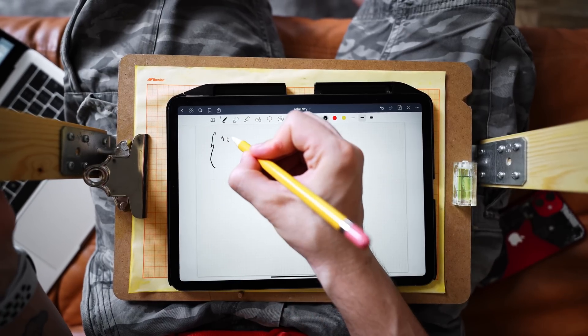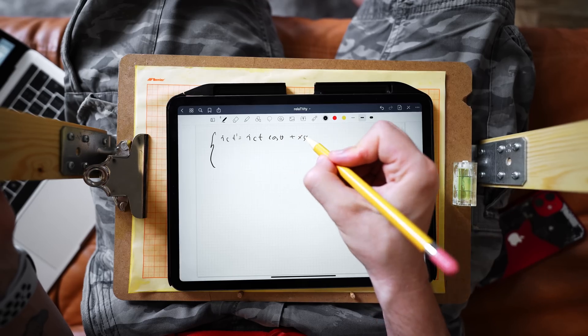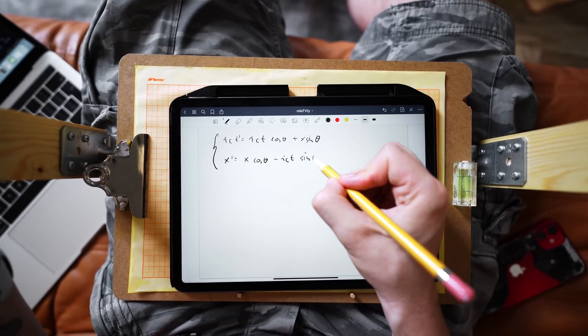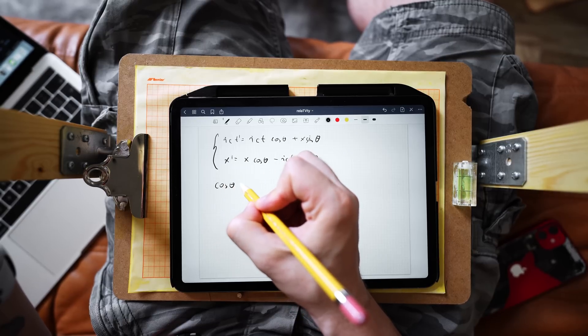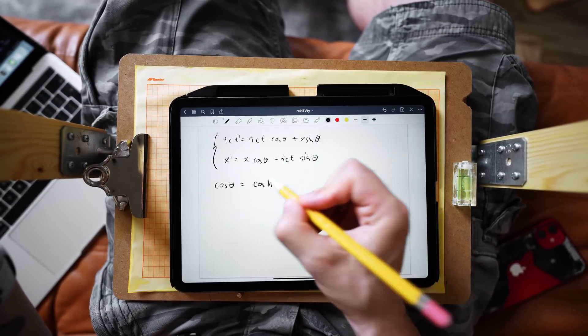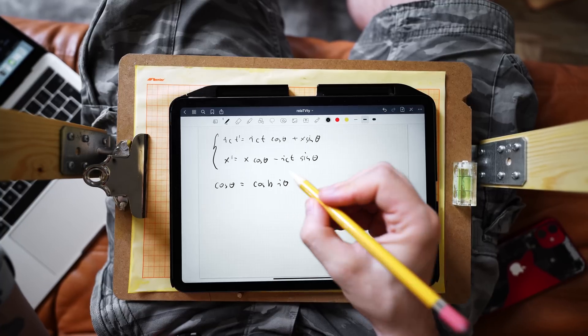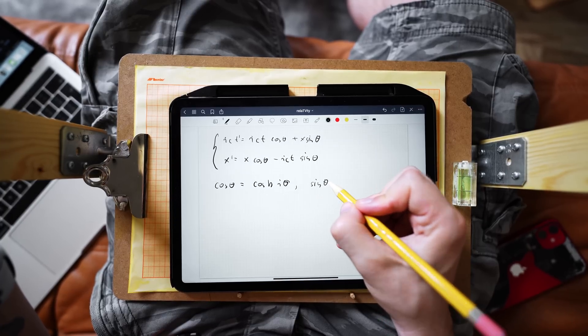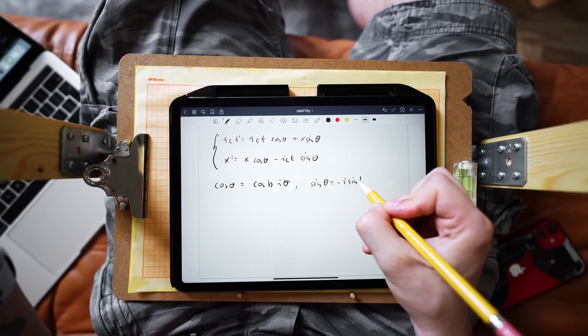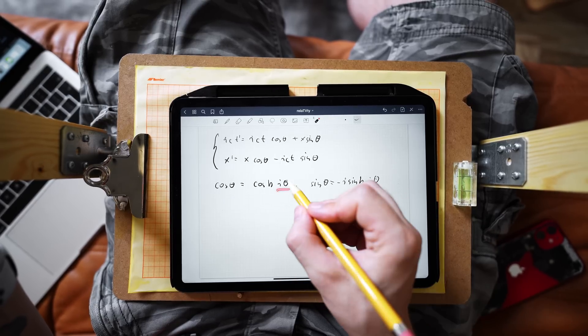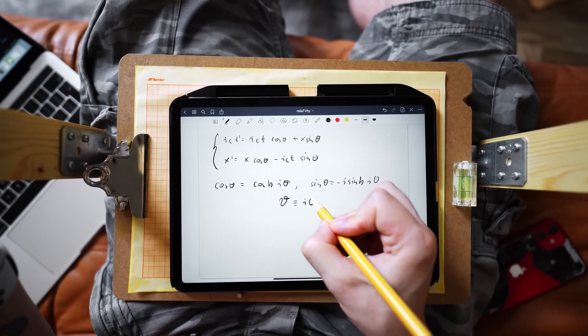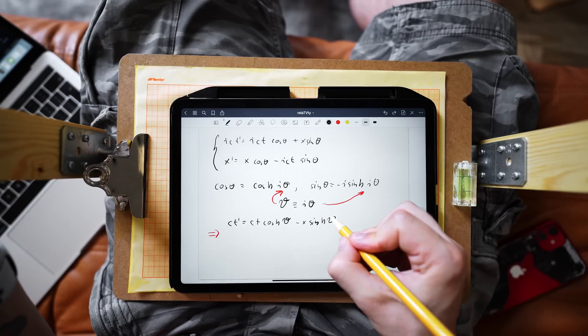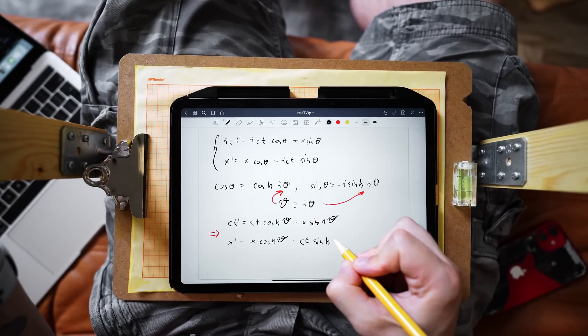In order to express our complex rotation in terms of real functions, let us rewrite again our equations, but instead of tau we will be using i times c times t. We can now use a relation between trigonometric functions and hyperbolic functions, cosine and sine. And the relation is quite simple, cosine theta is equal to cosine hyperbolic of i theta, while sine theta is equal to minus i times sine hyperbolic i theta. And instead of writing i theta, we can substitute curly theta. This time, these rotations are so-called hyperbolic rotations, where trigonometric functions are replaced with hyperbolic functions, cosine and sine hyperbolic.